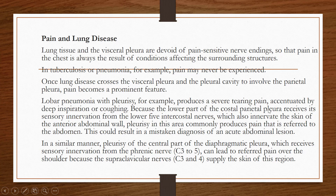The lower part of the costal parietal pleura receives sensory innervation from the lower five intercostal nerves, which also innervate the skin of the anterior abdominal wall. Because the nerve supply is the same, pleurisy in this area can produce pain that is referred to the abdomen, potentially resulting in a mistaken diagnosis of an acute abdominal lesion. Pain created in one region is referred to another region because the nerve supply is shared.